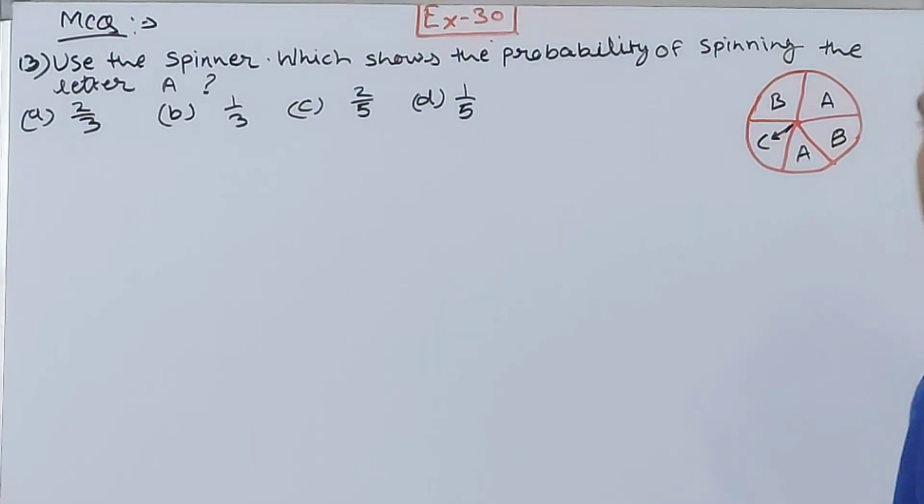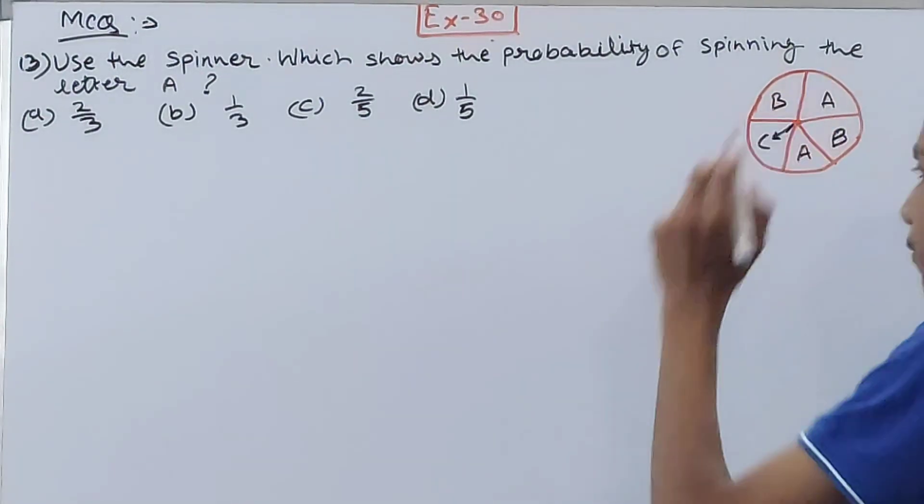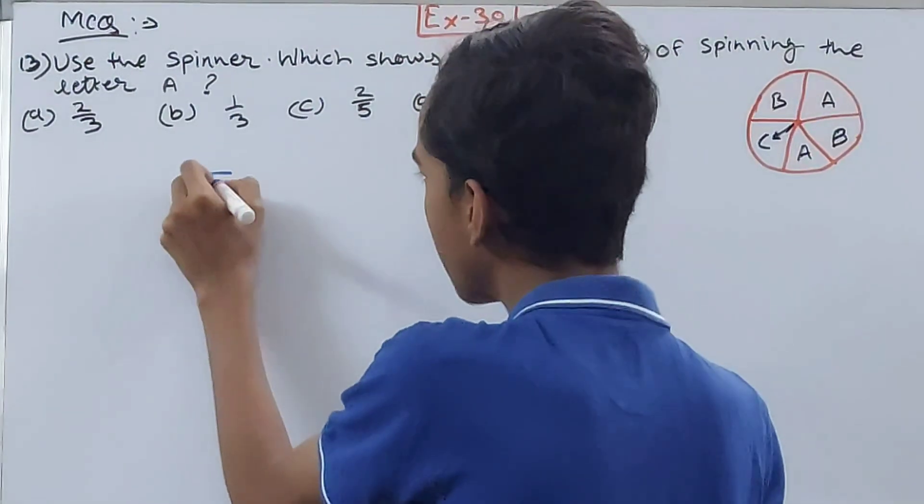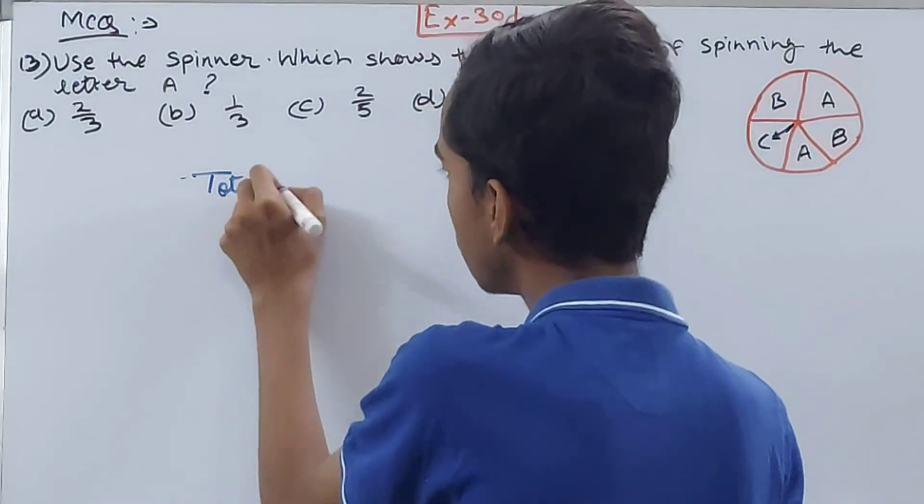See, this is again a spinner. You have to tell what is the probability of getting letter A. You can see, it's quite a simple question. We will calculate the total number of possible outcomes, right?